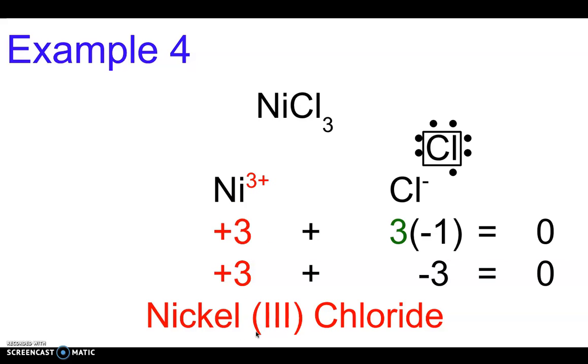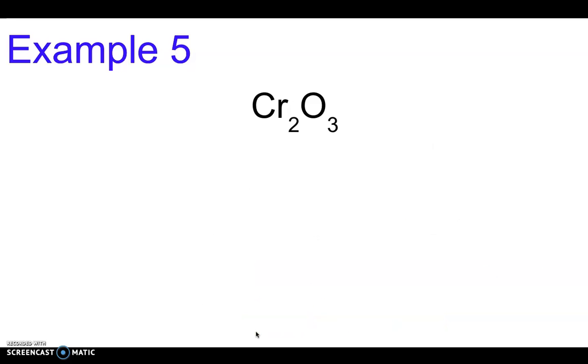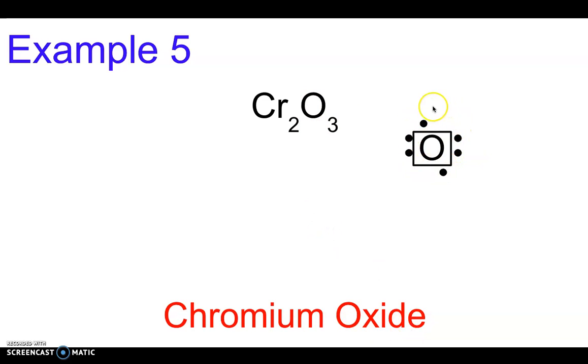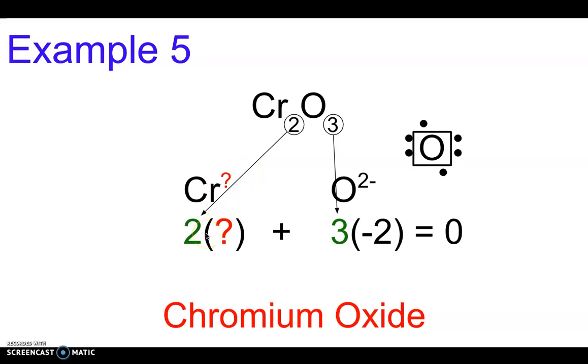Let's do another example. This one is Cr₂O₃. So we know that Cr is chromium, we know that O is oxide. Remember the suffixes for these change to -ide, so you don't write oxygen, you write oxide. This is the Lewis structure for oxygen. We can see it's missing two valence electrons, so it's going to be an oxygen 2-. And we don't know what the charge of chromium is, that's what we're looking for. So we've got two times whatever the charge of chromium is plus three times -2, and that's going to add up to equal zero.